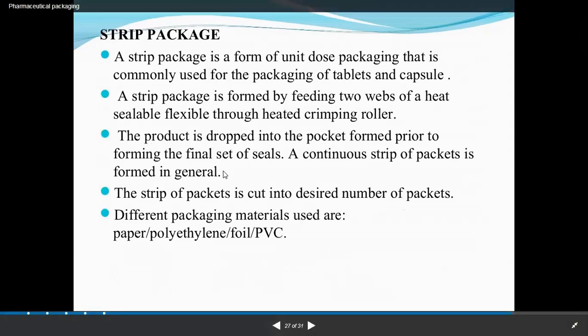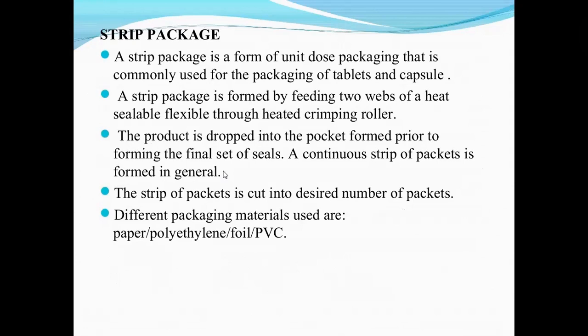Strip packaging is a form of unit dose packaging. Strip packaging is formed by feeding two heated crimping rollers. The product is dropped into the pocket prior to forming the final seals of the continuous strip package. The package is then cut into desired package sizes.